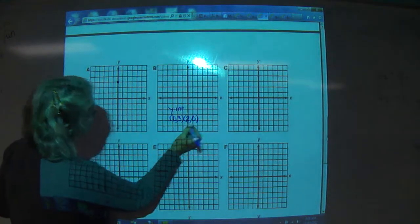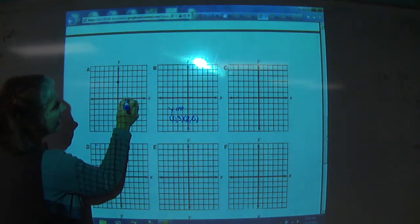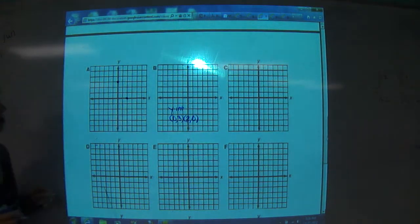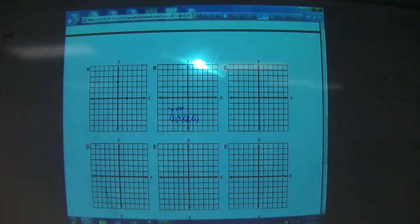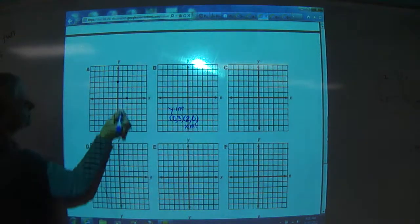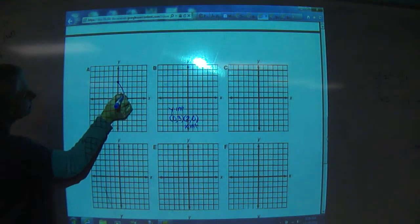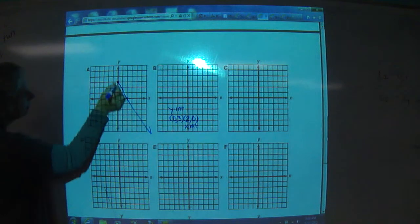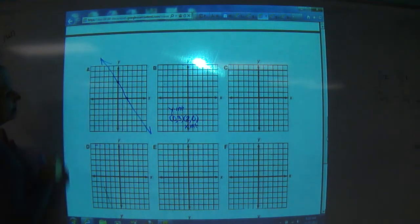Then we're going to go 2, 0, 1, 2, and we're not going to go up and down at all. That's the x-intercept because it crosses the x-axis. Then you draw your line, and you're done.